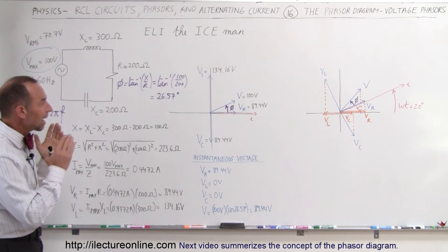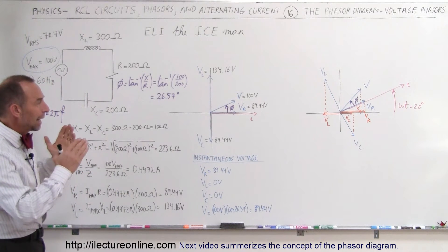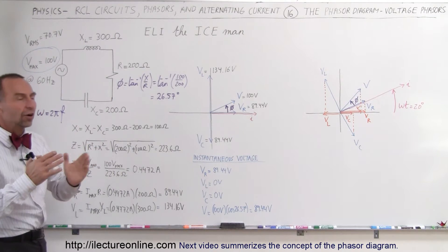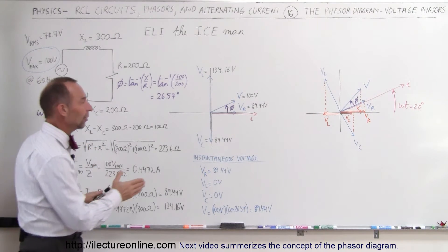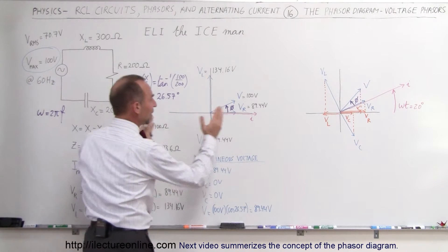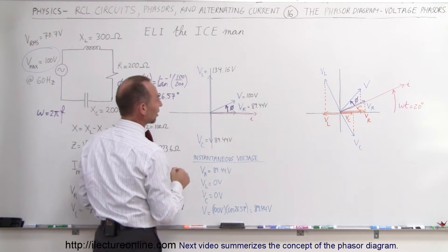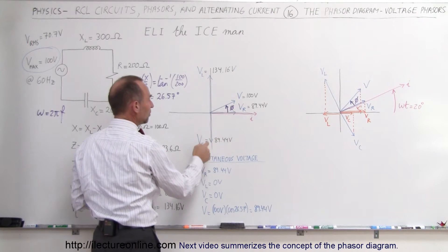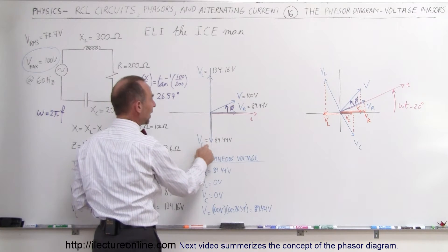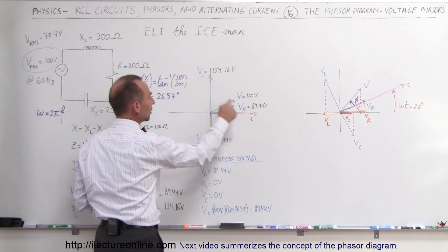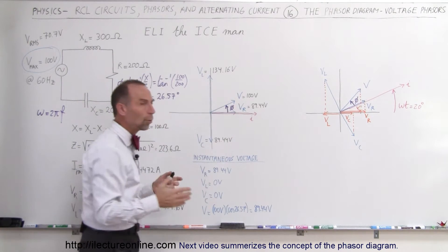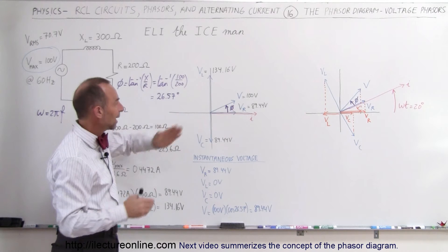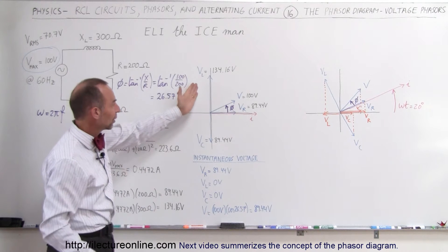At the instant that time starts at t equals zero, this is what the phasor diagram looks like. The voltages across the components — the capacitor, the inductor, and the resistor — will be 90 degrees out of phase from one another.